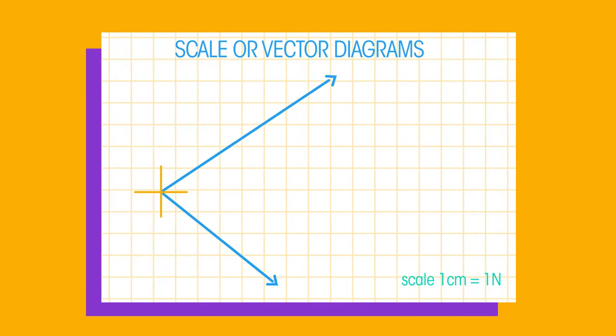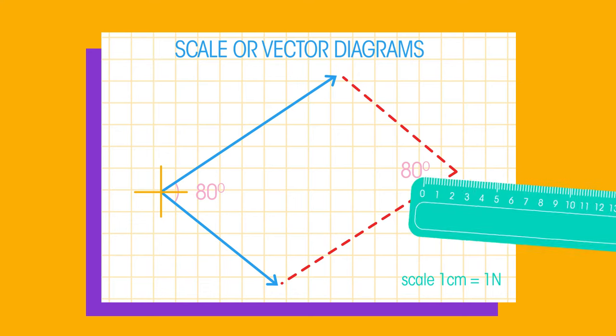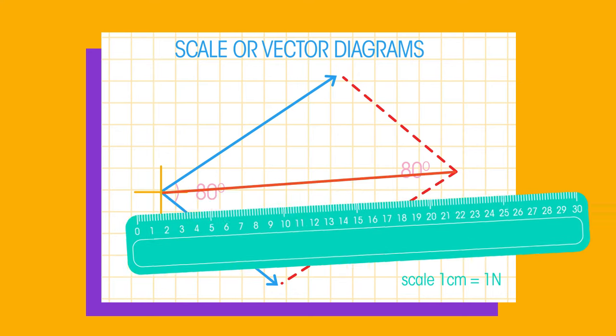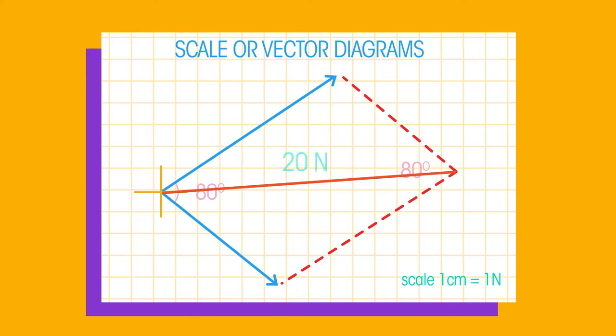Step 1. Draw the arrows at the correct angles to represent the forces. Step 2. Draw lines to make a parallelogram. And Step 3. Measure the diagonal of the parallelogram. This is your resultant force.